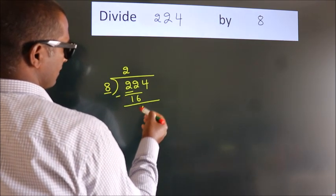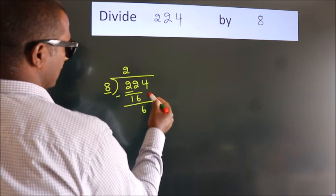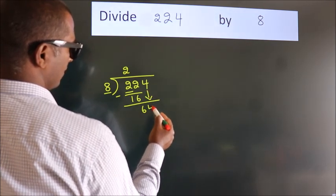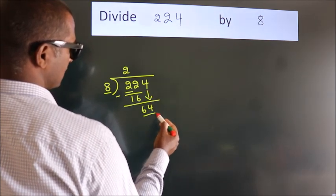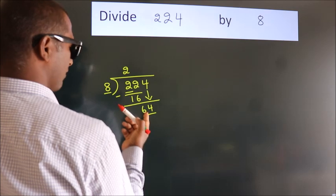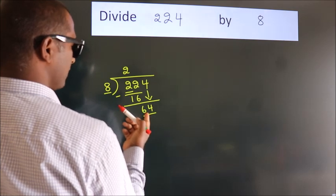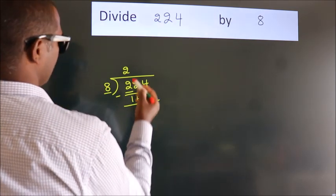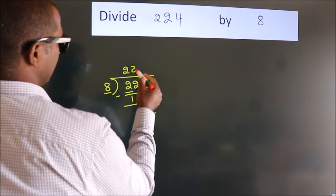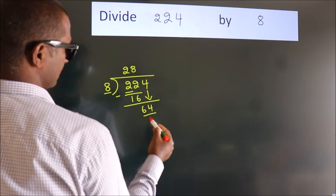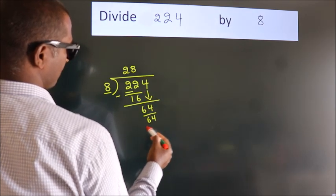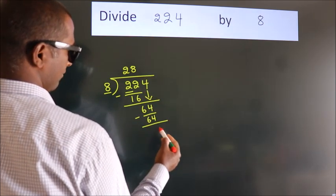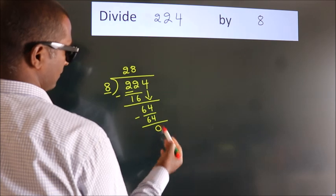After this, bring down the beside number. So, 4 down. So, 64. When do we get 64 in the 8 table? 8 eights, 64. Now we subtract. We get 0.